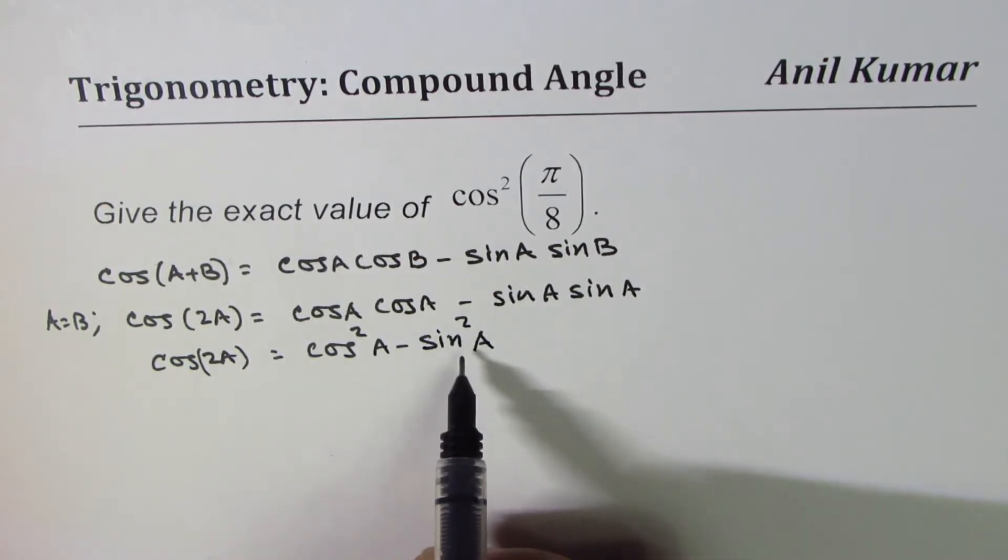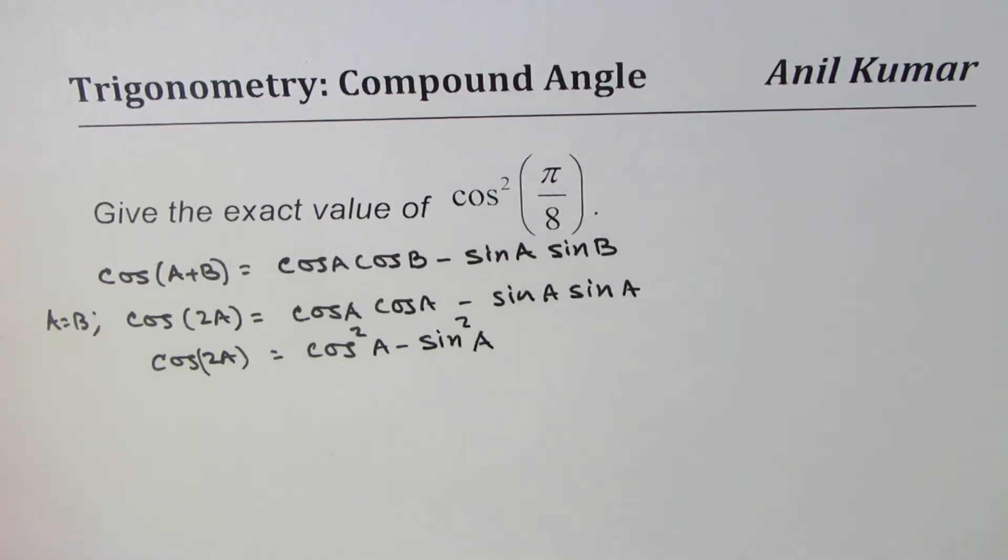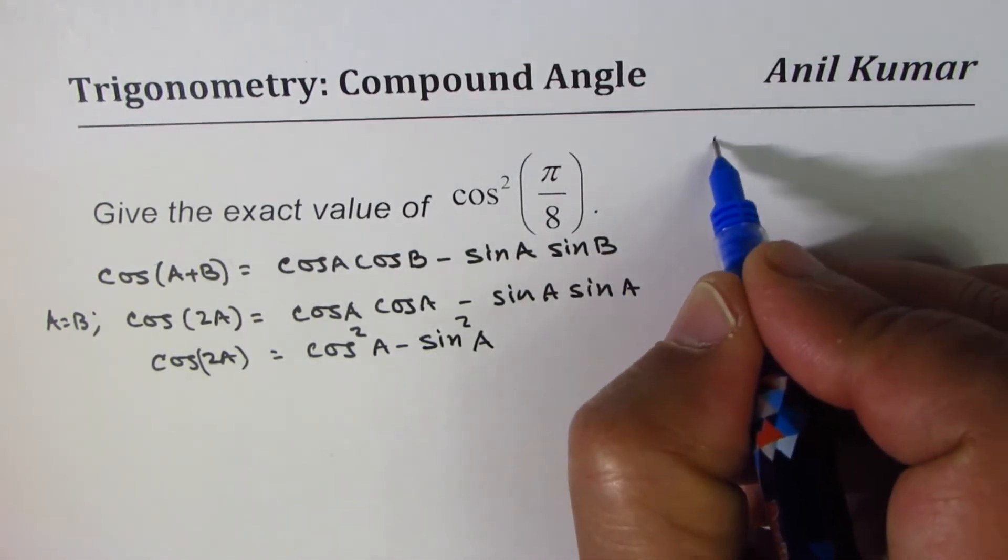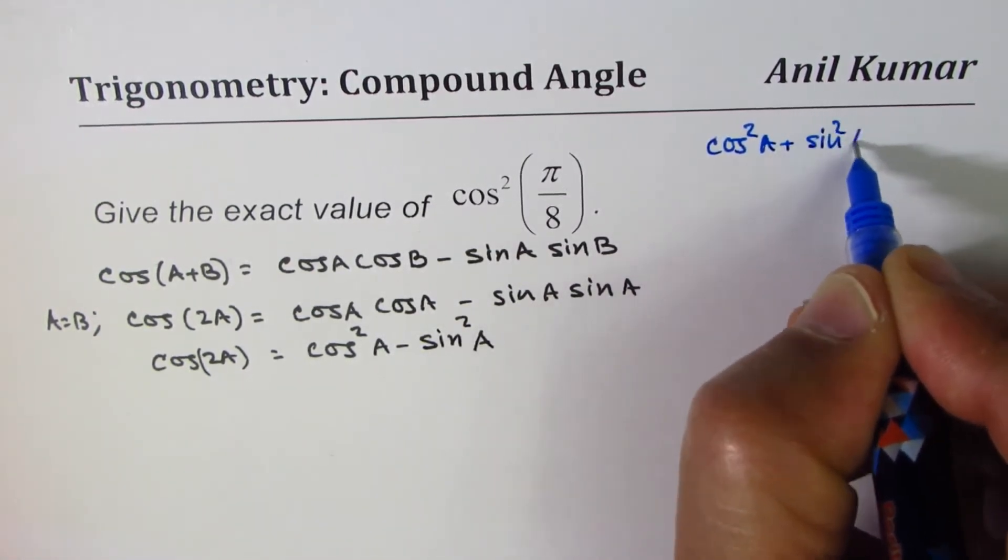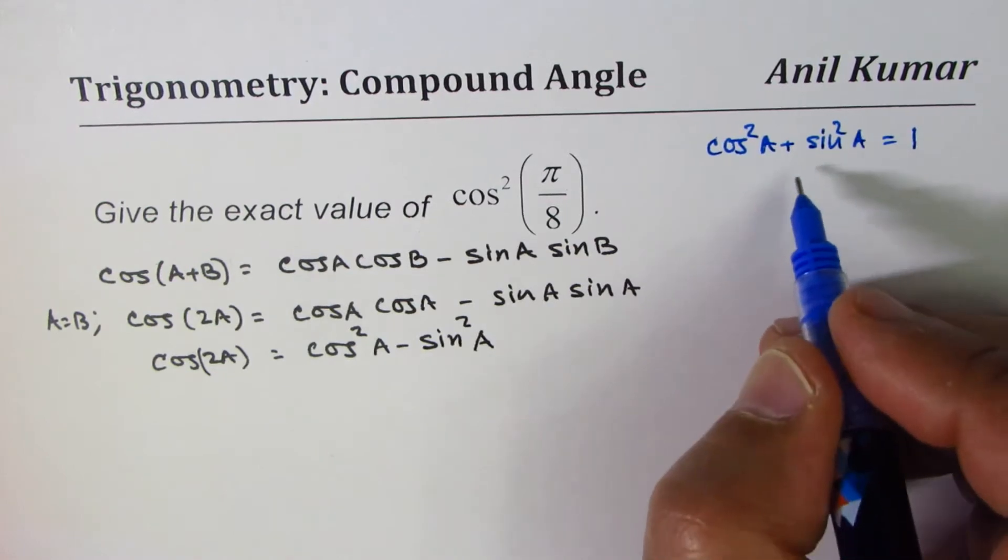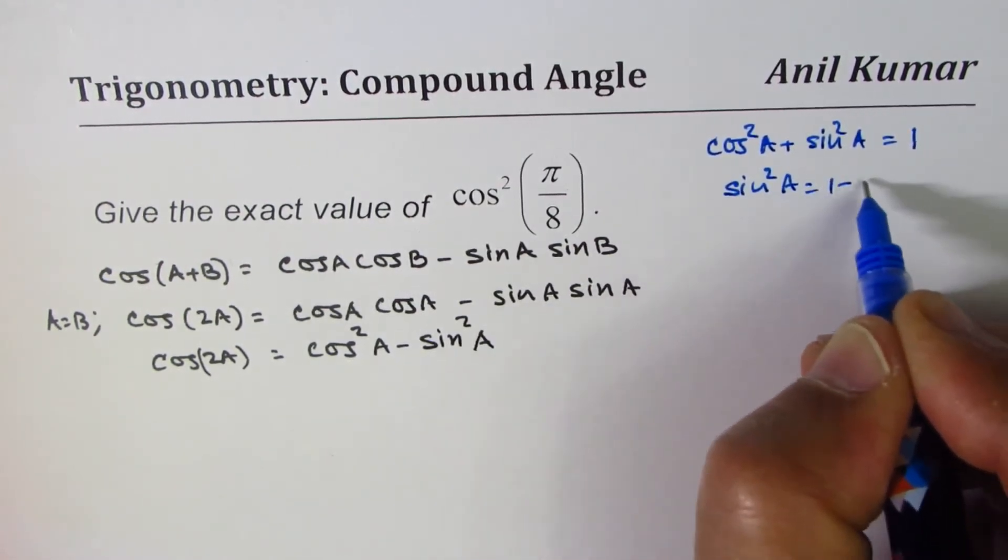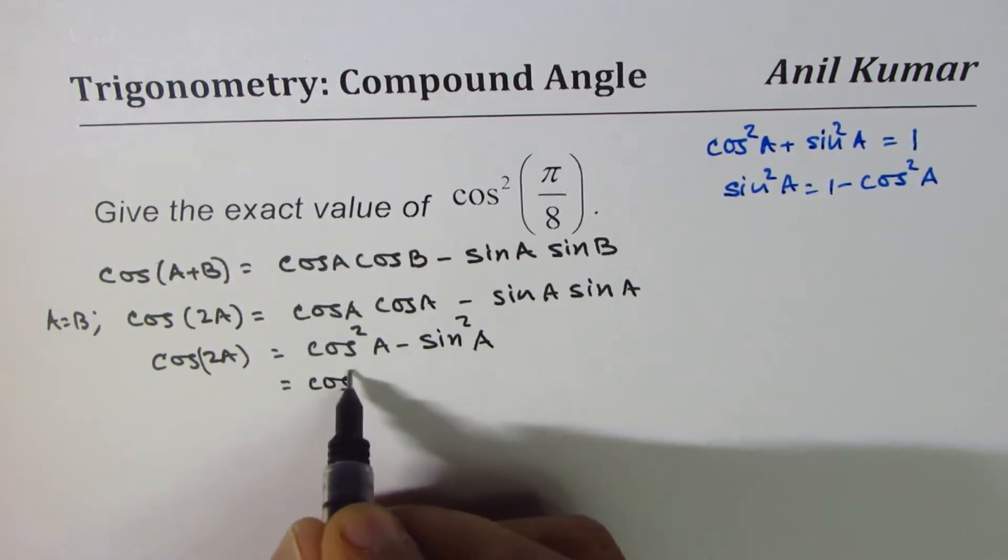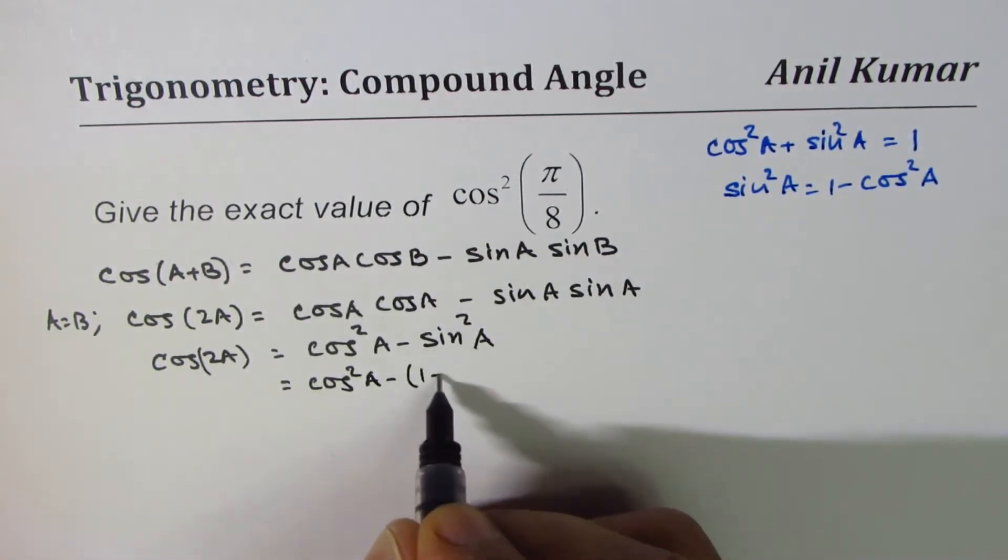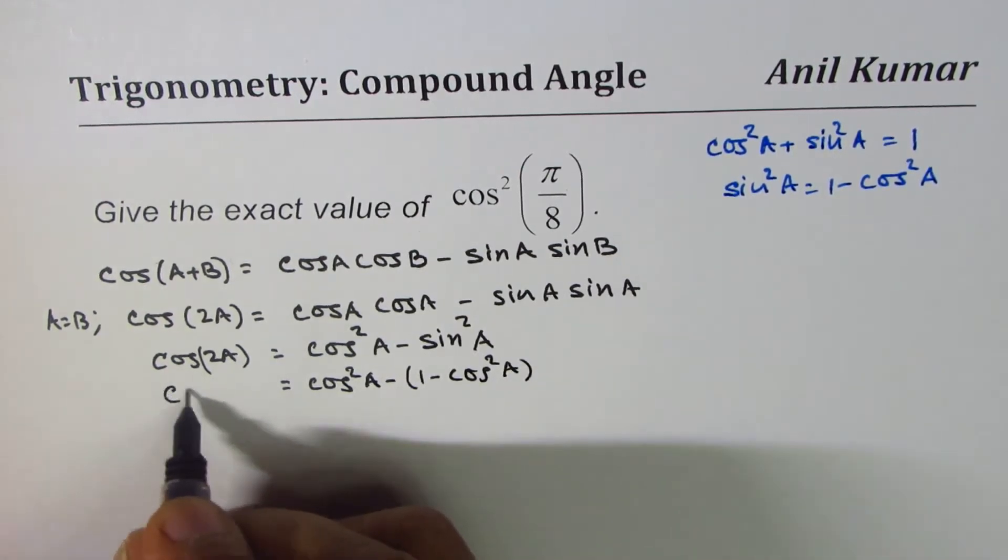Now you also know that sin²A could be written as 1 minus cos²A, correct? Now let me write down here: cos²A plus sin²A equals 1. So I could always write sin²A as 1 minus cos²A.